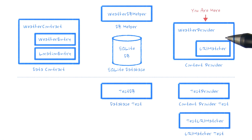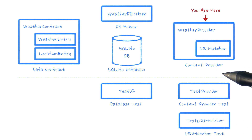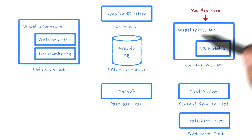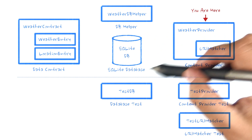In Sunshine, we'll be using content providers to help us efficiently sync data from the Internet. Combined with the utilities in the Android framework, it also simplifies getting database content to and from our user interface. We implement a content provider by extending the content provider class. In Sunshine, we'll call this class weather provider, and we'll use it to read and write the database we just created.